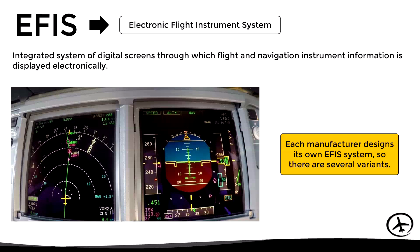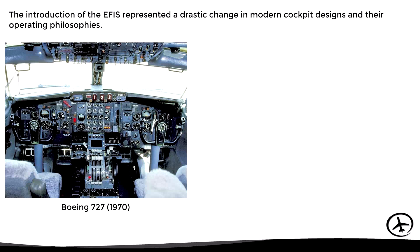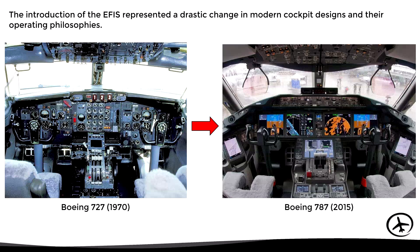The introduction of the EFIS represented a drastic change in modern cockpit designs and their operating philosophies. For example, in the image on the left, we can see the cockpit of a Boeing 727 designed in the 1970s when EFIS systems did not yet exist. While in the image on the right, we can see the cockpit of a Boeing 787 Dreamliner from 2015, where we can clearly see the implementation of the EFIS in almost all instruments.